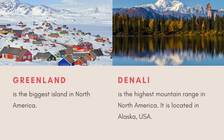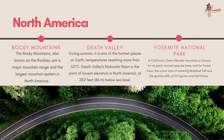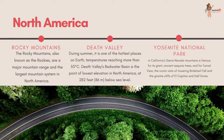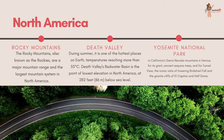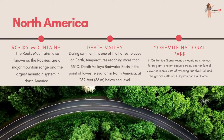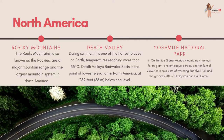Greenland is the biggest island in North America. The Nali is the highest mountain range in North America and is located in Alaska, which is in the USA. The Rocky Mountains, also known as the Rockies, are the largest mountain system in North America.